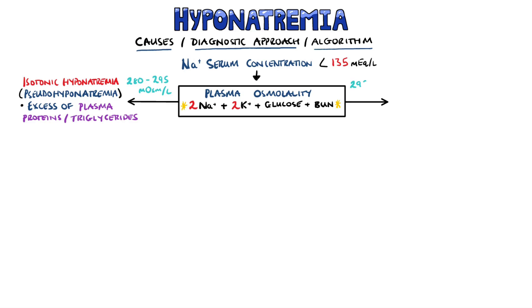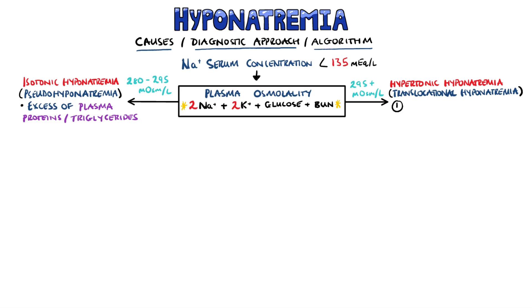A high plasma osmolality — a hypertonic osmolality — is also known as translocational hyponatremia. This occurs because of water being drawn out of the cells, which then leads to the sodium concentration decreasing. This is most commonly caused by hyperglycemia or through infusion of hypertonic solutions.